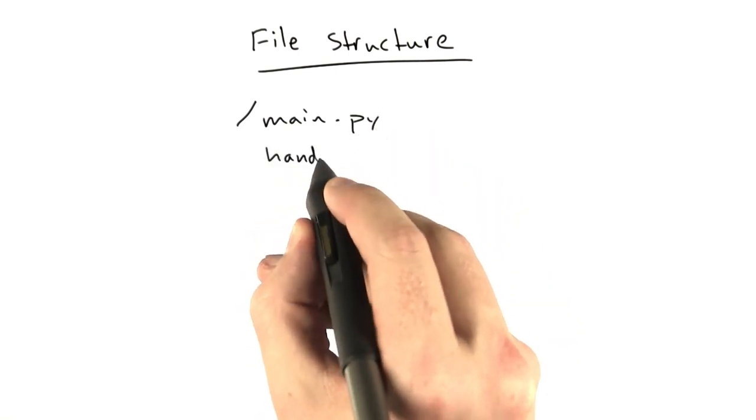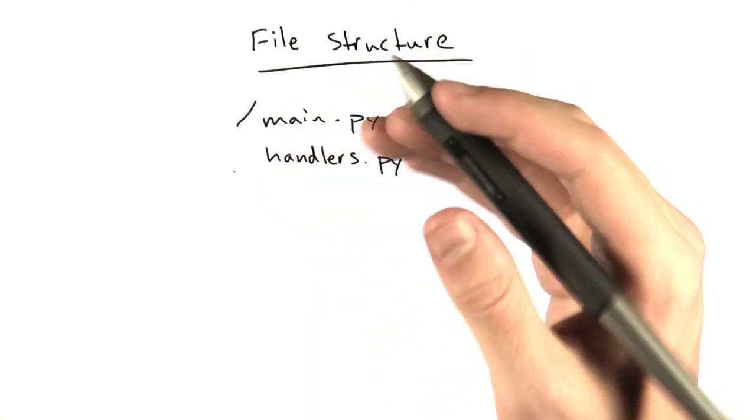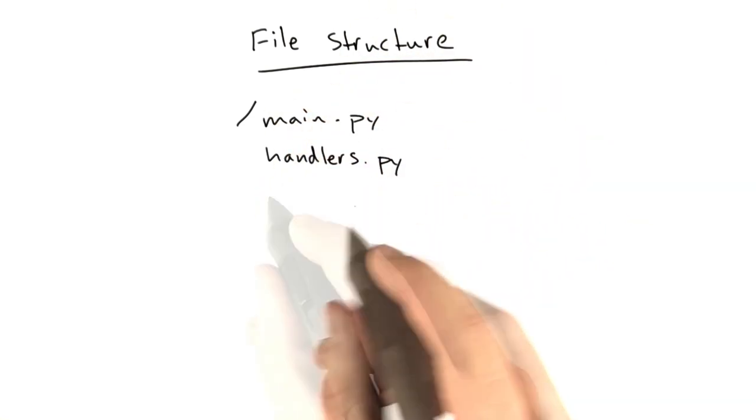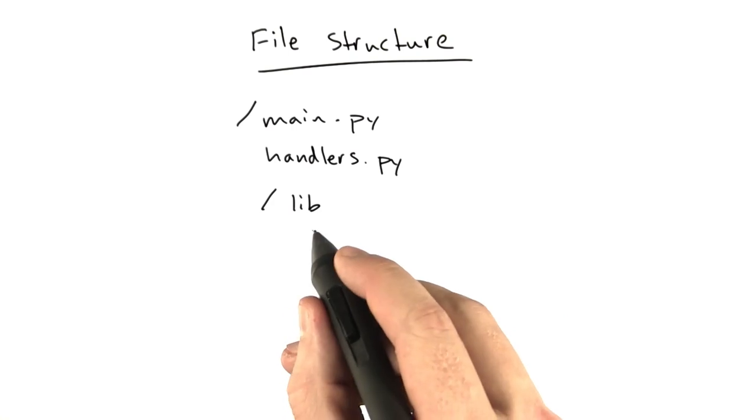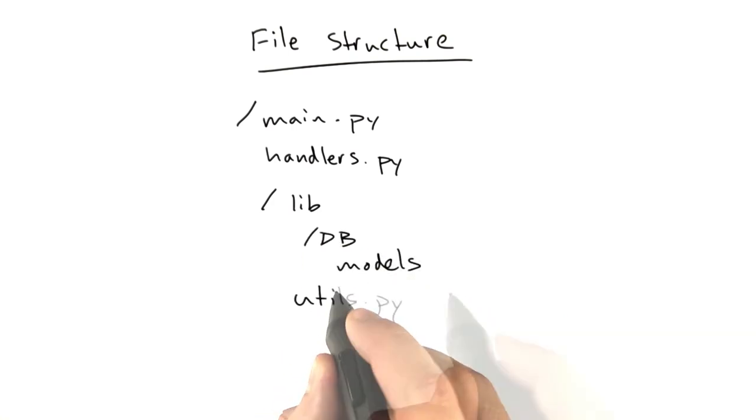So usually at my top level, I have main.py. I probably have some sort of a common file that's called like handlers.py or something of that nature that basically has the generic handler, things that happen on every single request. And then I'll probably have a directory called lib that might have some of the DB stuff, which may have all of my models. It may have utils.py and any of the specific stuff that we're doing.